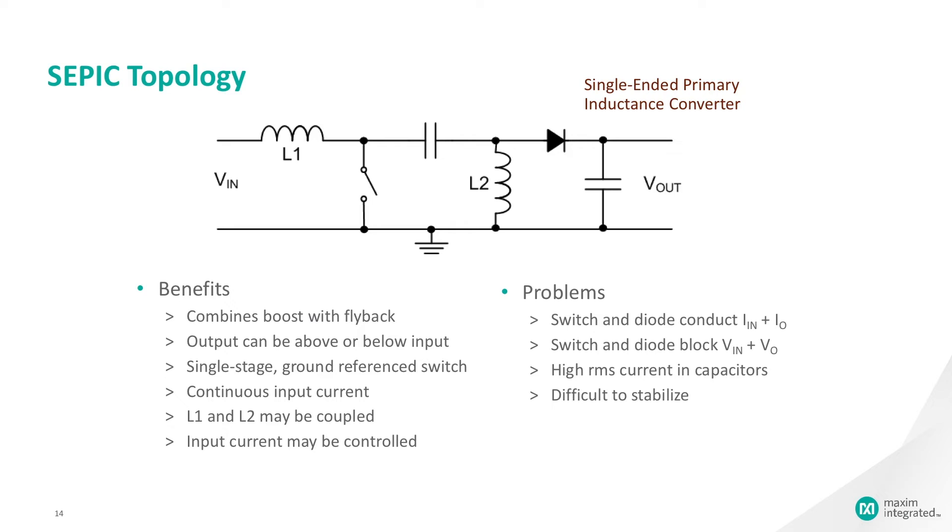SEPICs are useful in applications in which a battery voltage can be above and below that of the regulator's intended output. For example, a single lithium-ion battery typically discharges from 4.2 volts to 3 volts. If the other components in the system require 3.3 volts, then the SEPIC would be effective.